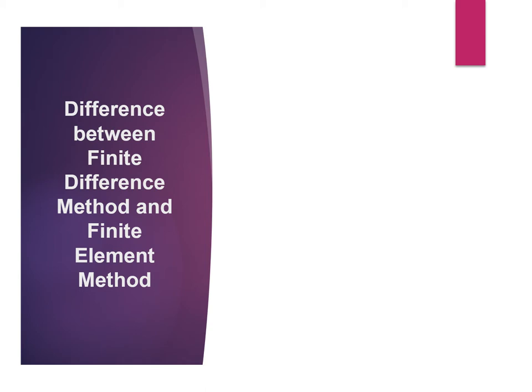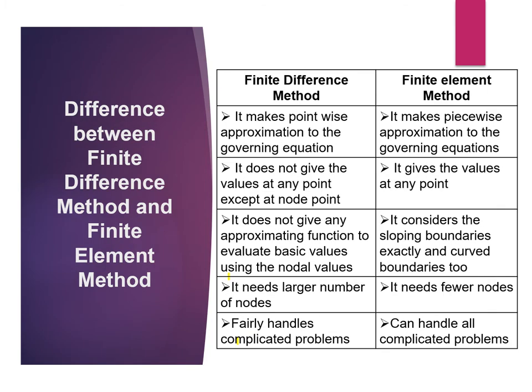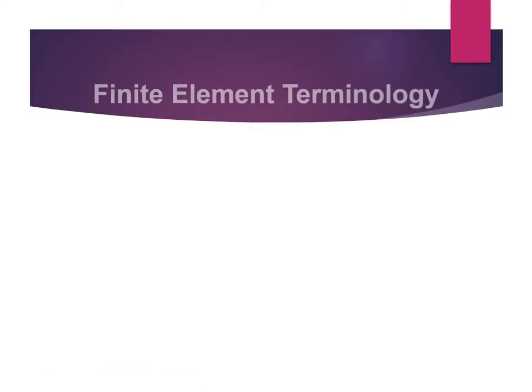Next is the difference between the finite difference method (FDM) and finite element method (FEM). FDM makes pointwise approximation to the governing equation, while FEM makes piecewise approximation. FDM does not give values at any point except at node points, while FEM gives values at any point. FDM does not provide an approximating function using nodal values, while FEM considers sloping and curved boundaries exactly. FDM needs a larger number of nodes, while FEM needs fewer nodes. FDM fairly handles complicated problems, while FEM can handle all complicated problems.